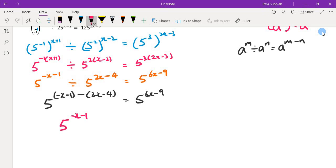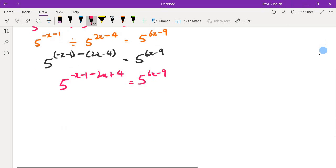So I have 5 to the power of minus x minus 1, minus times plus will be minus 2x, minus times minus will be plus 4, equals to 5 to the power of 6x minus 9.